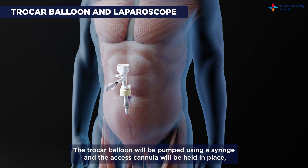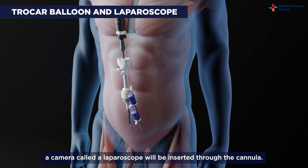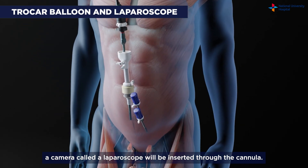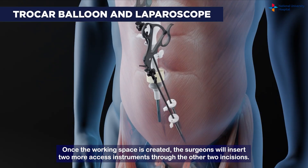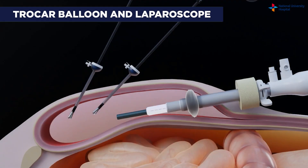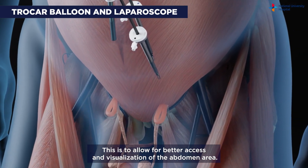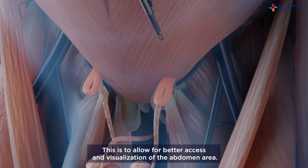The trocar balloon will be pumped using a string and the excess cannula will be held in place. A camera called a laparoscope will be inserted through the cannula. Once the working space is created, the surgeons will insert two more accessory instruments through the other two incisions to allow for better access and visualization of the abdomen area.